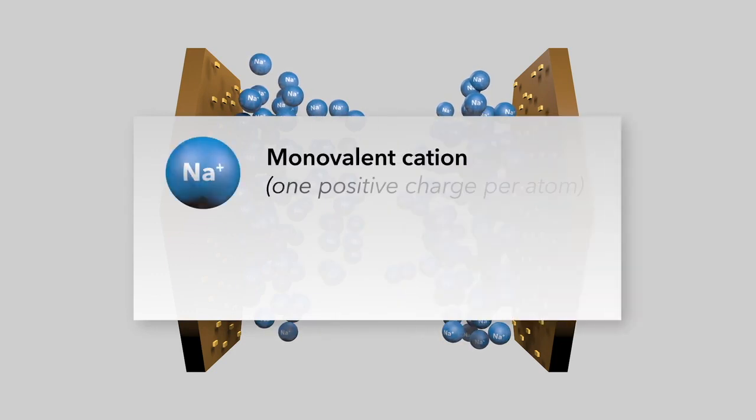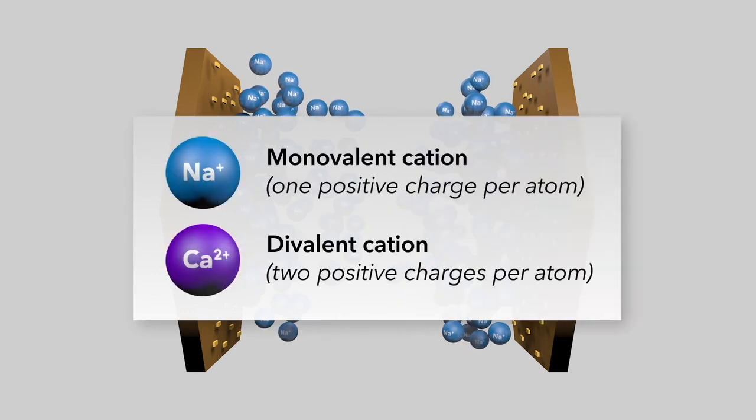Let's look now at what happens when we substitute calcium ions for sodium ions in the double diffuse layer.